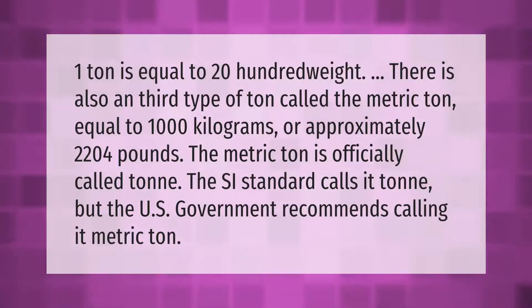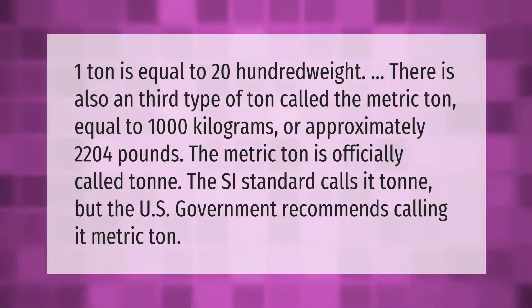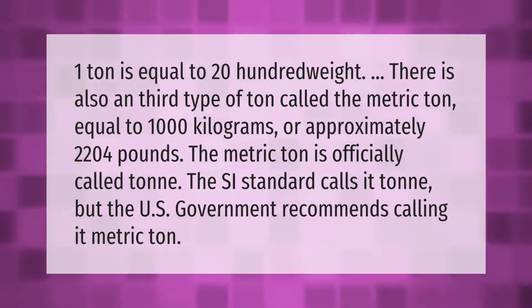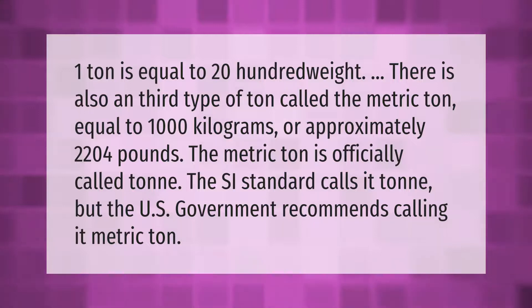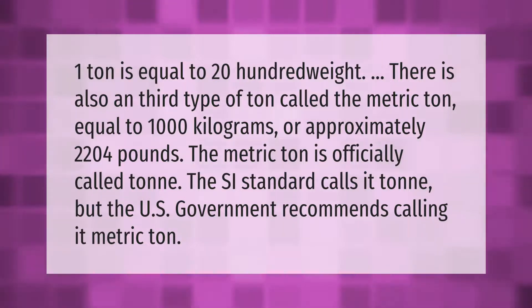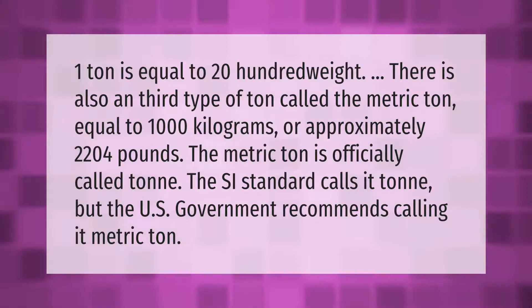One ton is equal to 20 hundredweight. There is also a third type of ton called the metric ton, equal to 1,000 kilograms or approximately 2,204 pounds. The metric ton is officially called tonne — the SI standard calls it tonne, but the U.S. government recommends calling it metric ton.